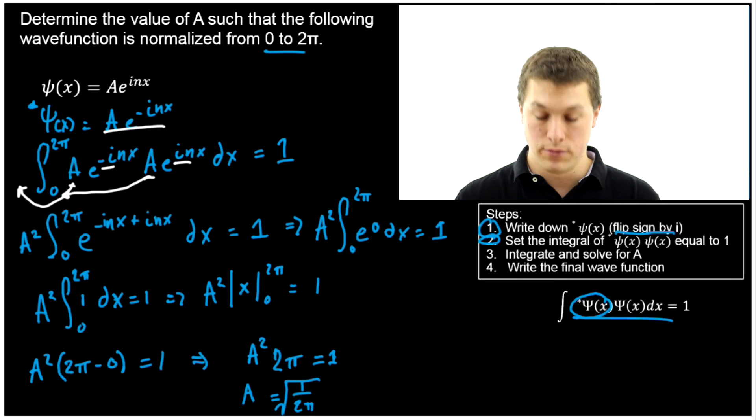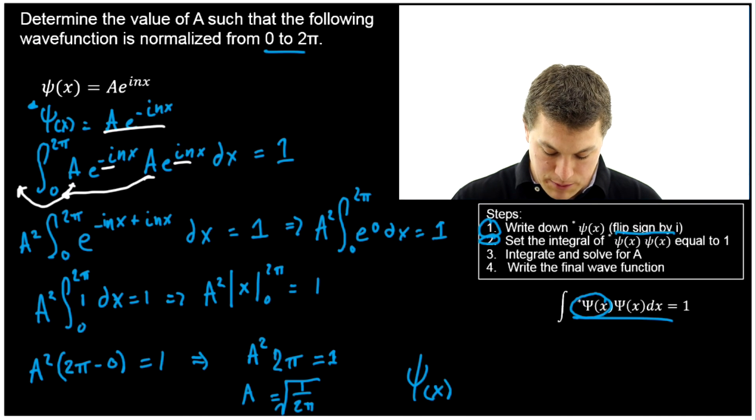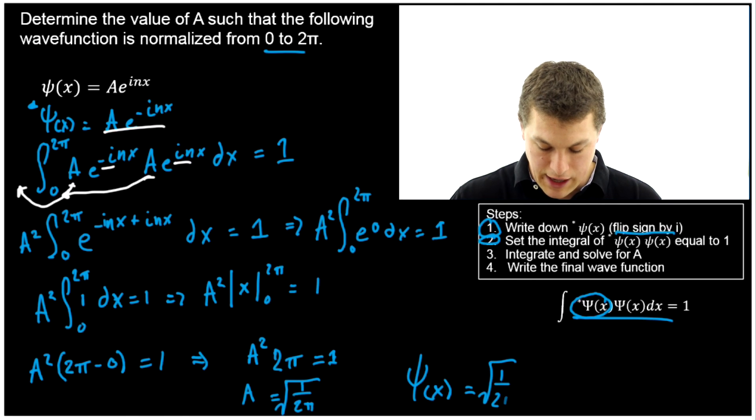So strictly speaking the problem is solved. But our wave function, it's important to keep in mind, is now √(1/(2π)) times e^(inx).